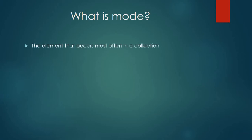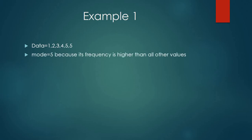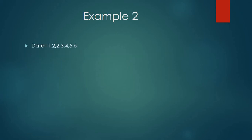So what is mode? The element that occurs most often in a collection or sample data is called the mode. For example, we have data where the frequency of one, two, three, and four is only one, while the frequency of five is two. Because the frequency of five is higher than all other elements, the mode of this data would be five.